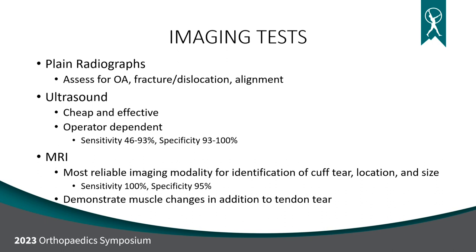If you suspect rotator cuff tearing, ultrasound and MRI are diagnostic tools to identify it. Ultrasound is mostly available at academic centers — it's cheap and effective, can identify large and small tears. The dilemma is it's very operator dependent, reliant on probe position and patient arm placement. Its sensitivity for detecting a tear is 46–93% depending on the study, while its specificity — the ability to correctly identify patients without a problem — is much better.